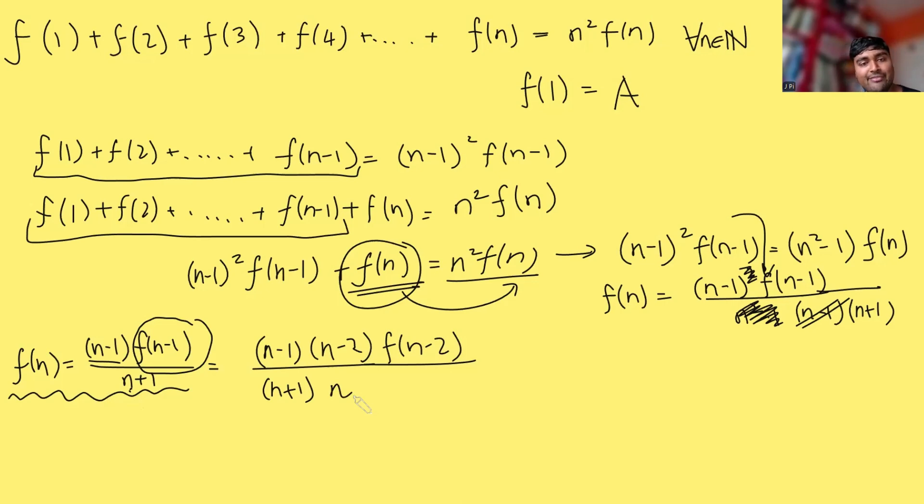Okay cool so f(n) is (n-1)(n-2) divided by (n+1) times n all times f(n-2).